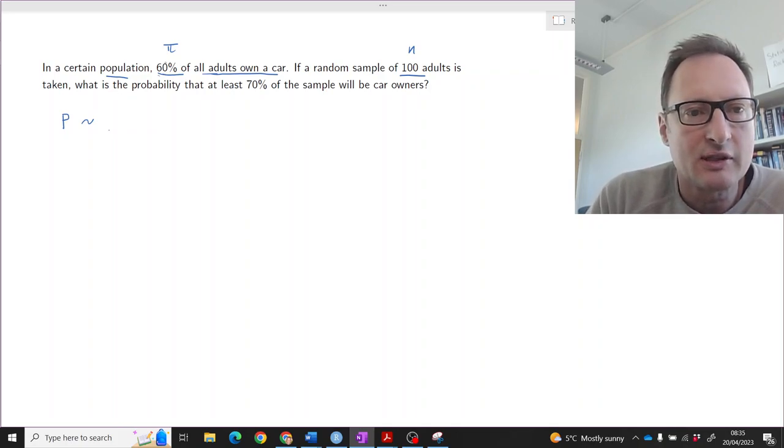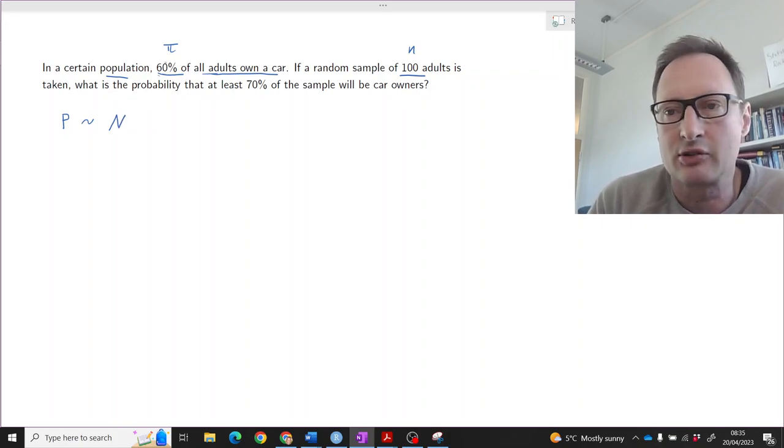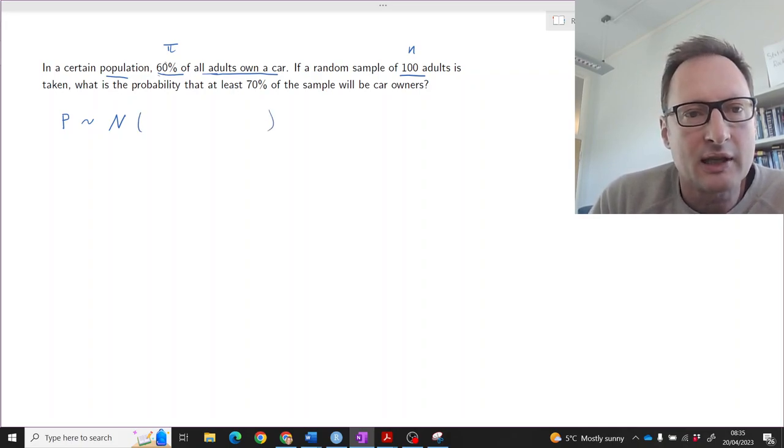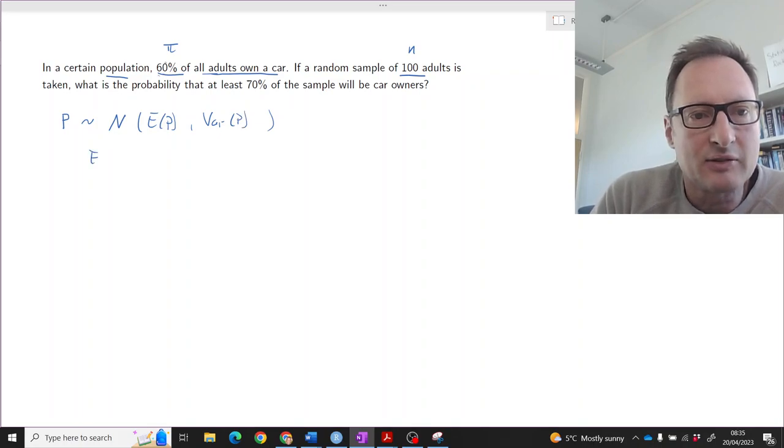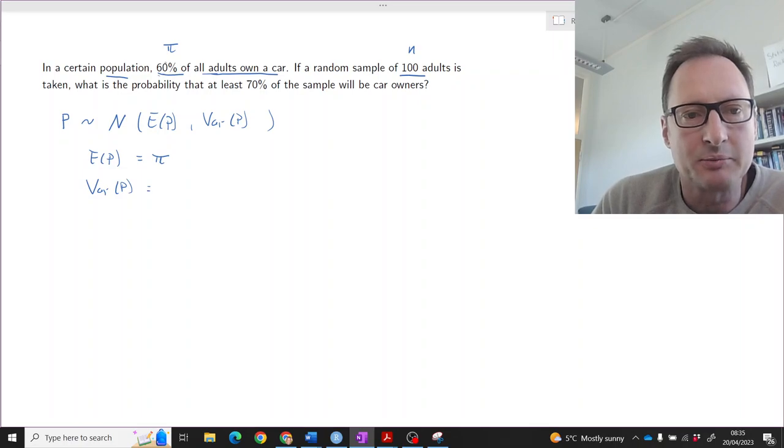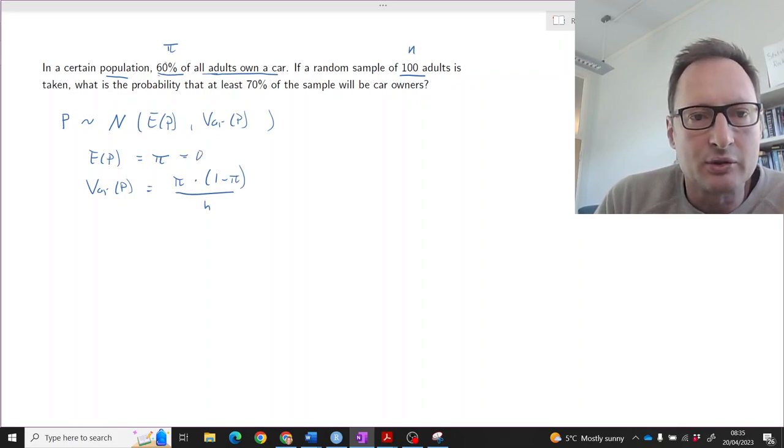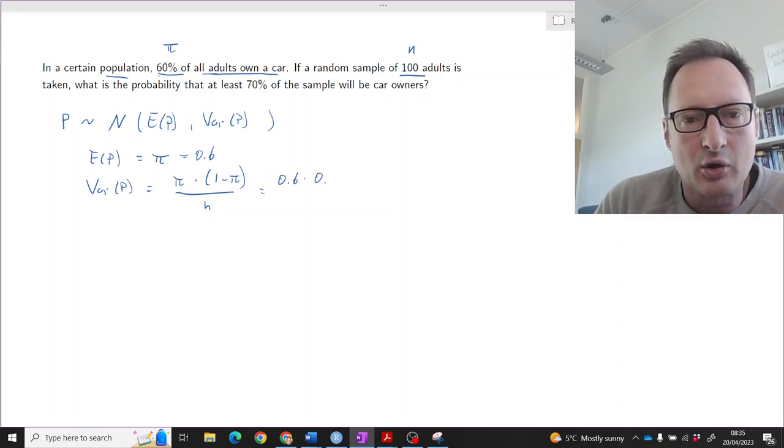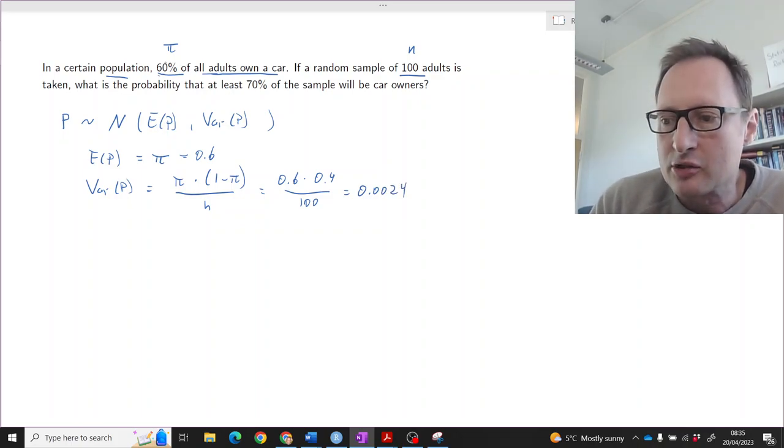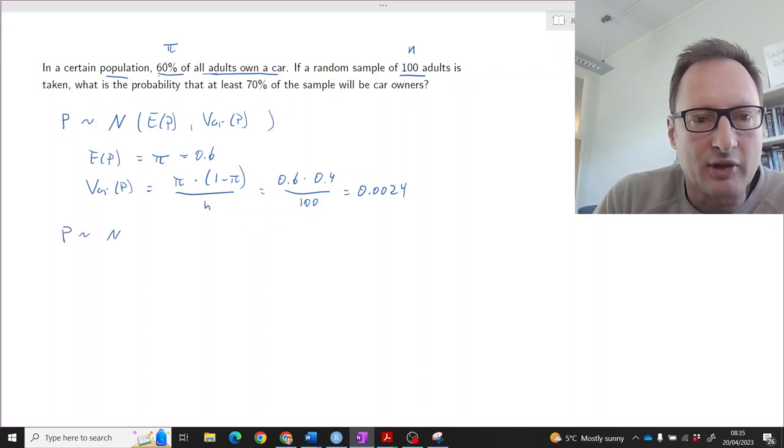We know that for large sample sizes, this can be approximated with a normal distribution and 100 is certainly a large enough sample size. And that is then described by an expected value of p-hat and by the variance of p-hat. Now the expected value of p-hat, so what's the expected sample proportion? That is just equal to the population proportion pi, which in this case we know. The variance of p-hat is also related to that population proportion. It's calculated as pi times 1 minus pi divided by n. So the expected value is 0.6 and the variance is 0.6 times 0.4 divided by 100 and that is 0.0024.